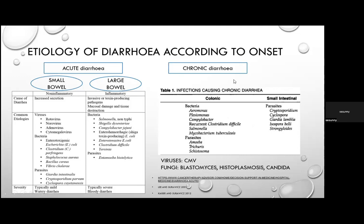In chronic diarrhoea, small intestinal causes are mainly parasites: Cryptosporidium, Cyclospora, Giardia lamblia, Cystoisospora belli, Strongyloides. Colonic causes include Campylobacter, Salmonella, Mycobacterium tuberculosis, non-tuberculosis mycobacteria, and parasites like Entamoeba, Trichuris, and Schistosoma. Don't forget viruses like CMV, and fungi like Blastomyces or Histoplasma depending on the geographic context.